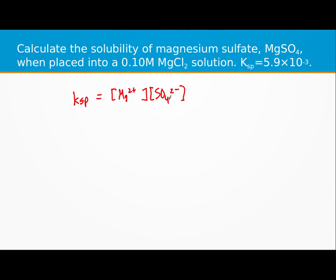In terms of S, it would be S and S, so we would start with an S and an S there, and we'd have this as 5.9 times 10 to the negative third.